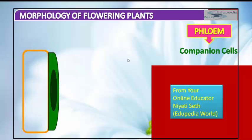Companion cells work in conjunction with the sieve tube. Sieve tubes are more advanced than sieve cells and are found in flowering vascular plants called angiosperms. The sieve tubes have specialized companion cells located near them; these companion cells carry out energy-consuming metabolic activities for the sieve tube elements, which improves the efficiency of the phloem.